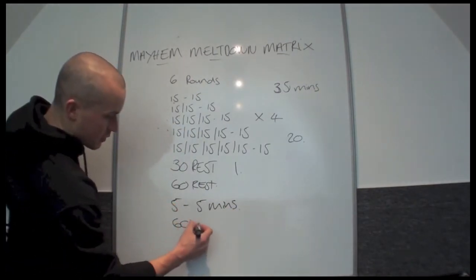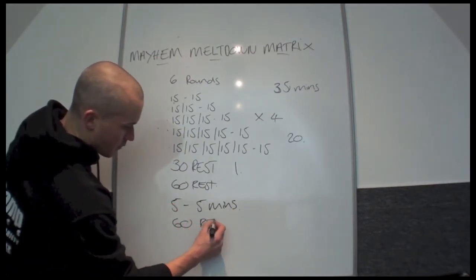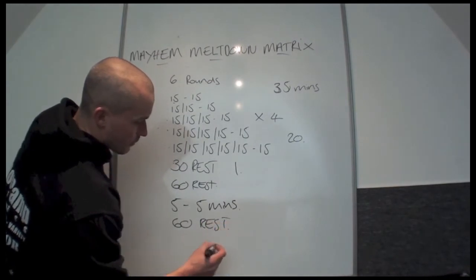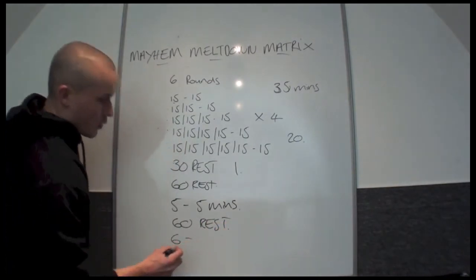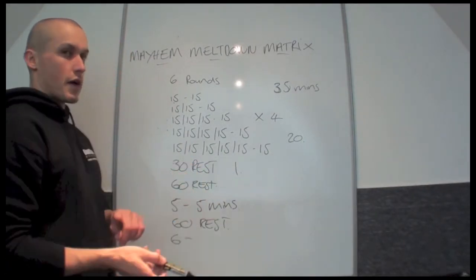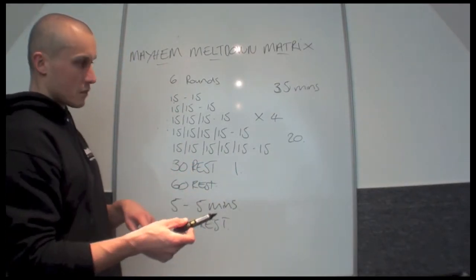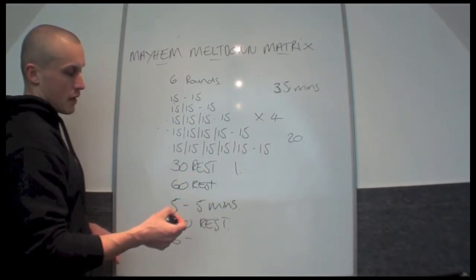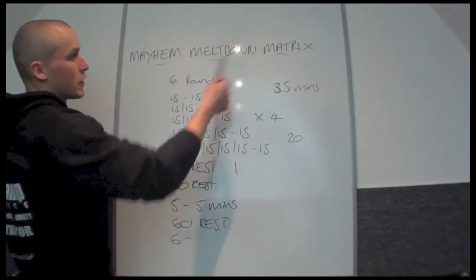Then you're going to get another 60 seconds rest after round number 5. Then on to round number 6. What you do is you complete the 20 exercises again, but you start the opposite way round. So you start from the bottom, and the last exercise work your way back to the beginning. And that will complete the Mayhem Meltdown Matrix.